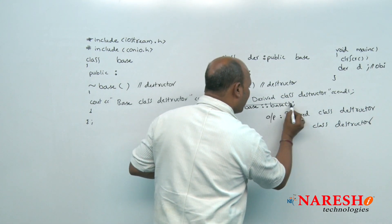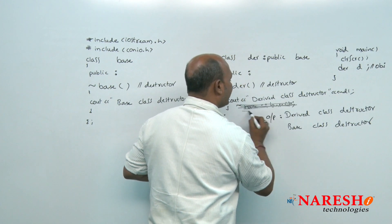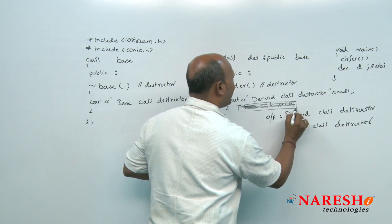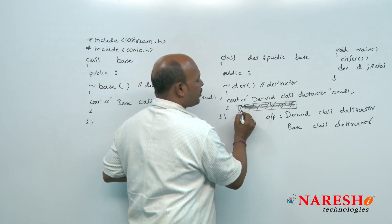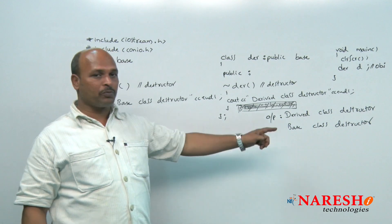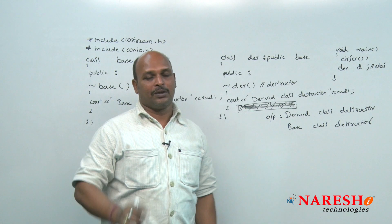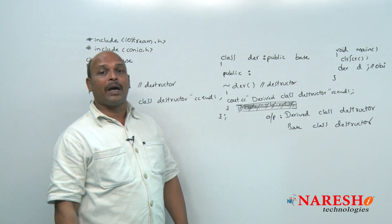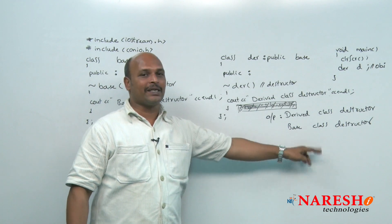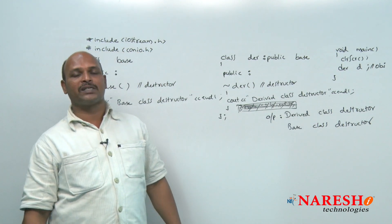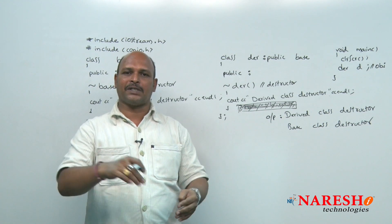There is no need to explicitly call the base class destructor — it is invoked implicitly by the compiler. That is why the program output is "derived class destructor" first, then "base class destructor". In contrast, for constructors, the base class constructor executes first and the derived class constructor executes later. That is why I said constructors and destructors follow the LIFO concept — last in, first out.